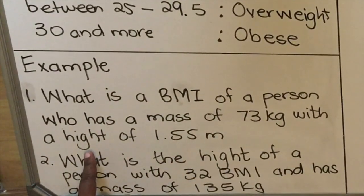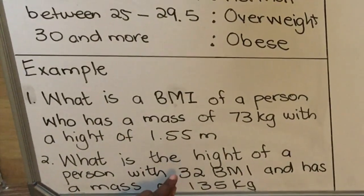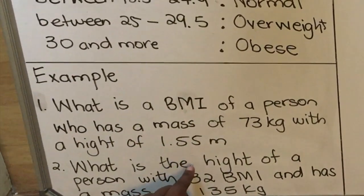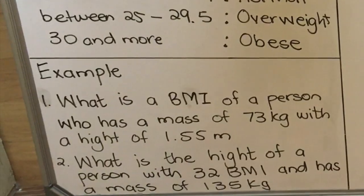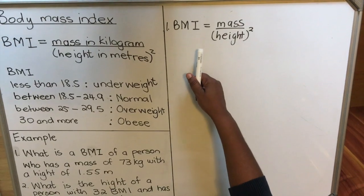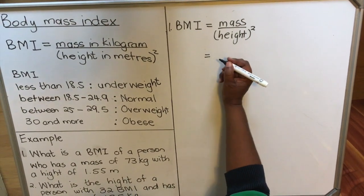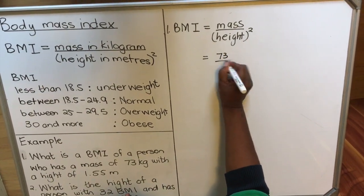Your height must be in meters. If it's not in meters, you have to convert it to meters before using the body mass index formula. So you're going to write the formula: Body mass index equals mass divided by height squared. Our mass is 73 divided by our height, which was 1.55, and then you square it.